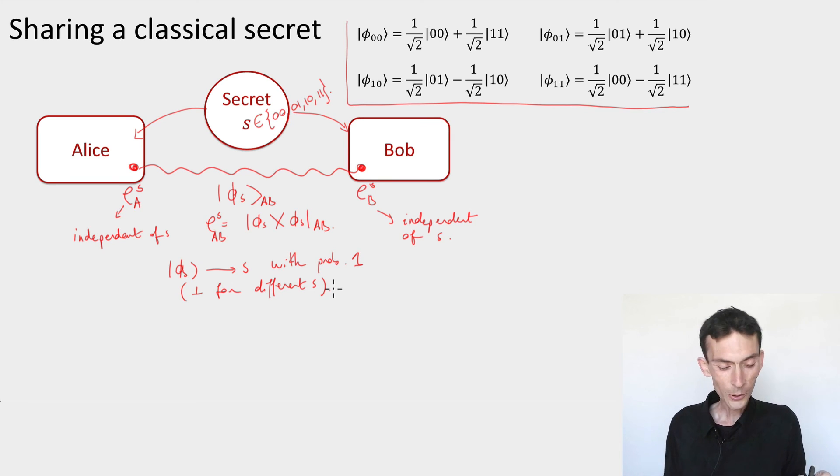The idea is simply to encode secret s using the Bell basis state phi s. And this satisfies all the properties that we need. We know that the four states are orthogonal, so they let us recover the secret s. But their reduced densities on A or B are the totally mixed states. So these never leak any information about s.